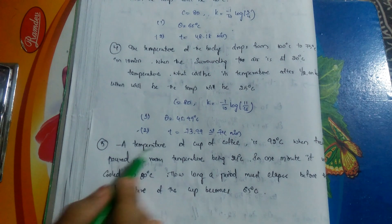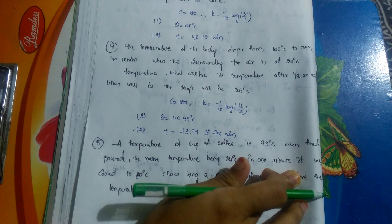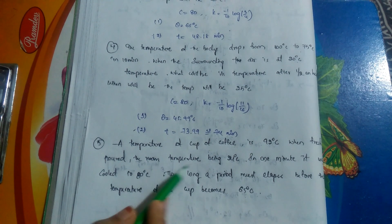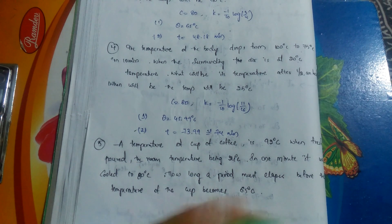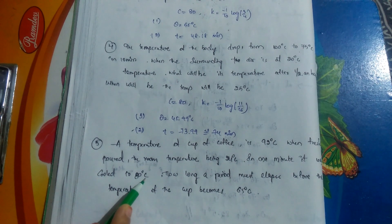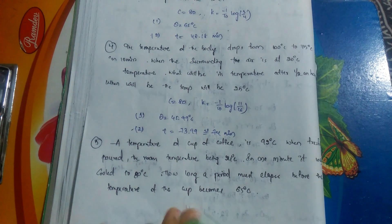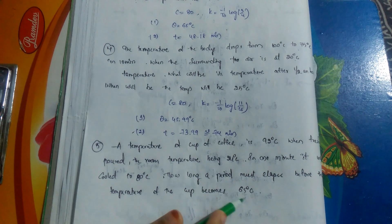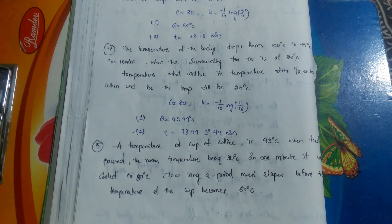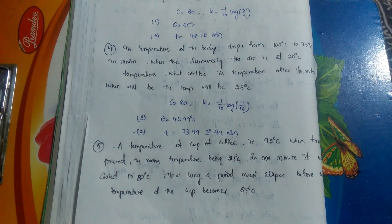Third practice problem: a cup of coffee at 92°C in a room at 25°C cools to 80°C in one minute. Find how long before the temperature becomes 65°C. These are all very important questions, most repeated in exams. Practice all these problems compulsorily — you will get at least two questions from the Newton's Law of Cooling topic.